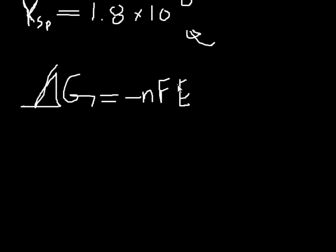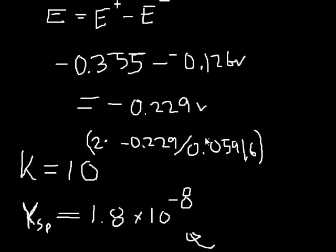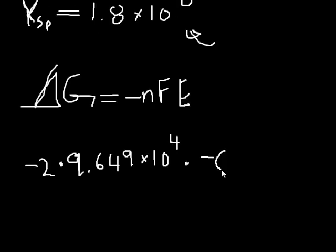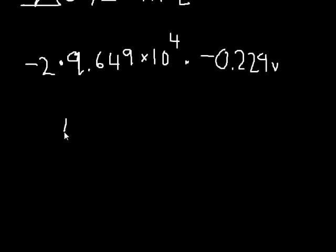So let's try this out. We are going to get negative 2 times 9.649 times 10 to the fourth, and that is going to be multiplied by our potential difference for the cell, the negative 0.229 volts. So our negatives are going to cancel and we are going to end up with 44,192 joules.